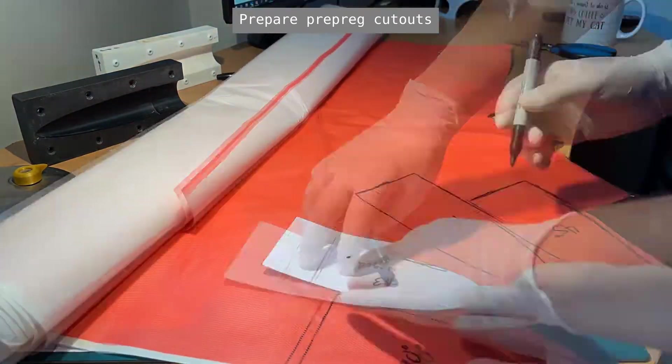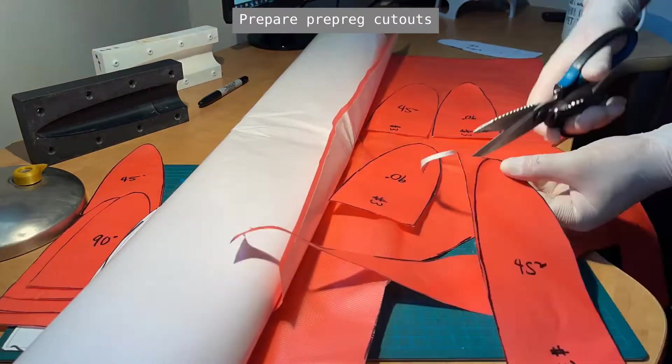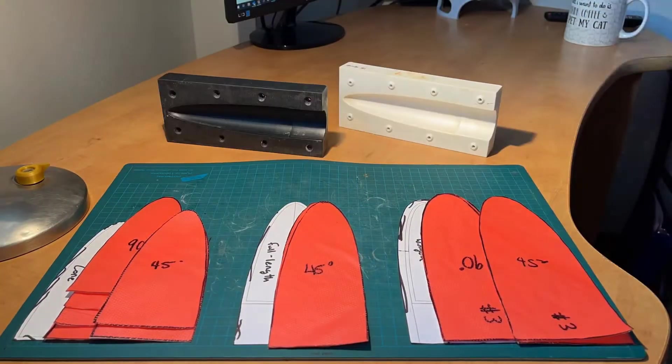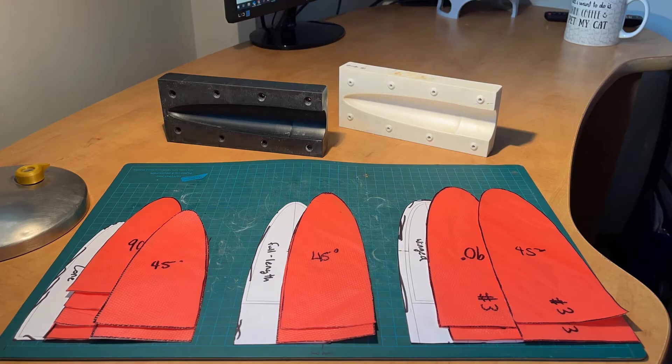Using a sharpie to trace the templates, they can easily be cut with scissors along the lines to acquire all the needed shapes. Make sure to label each of the cutouts so you don't mix them up. The cutouts can be placed back in the freezer if you aren't ready to lay up yet.